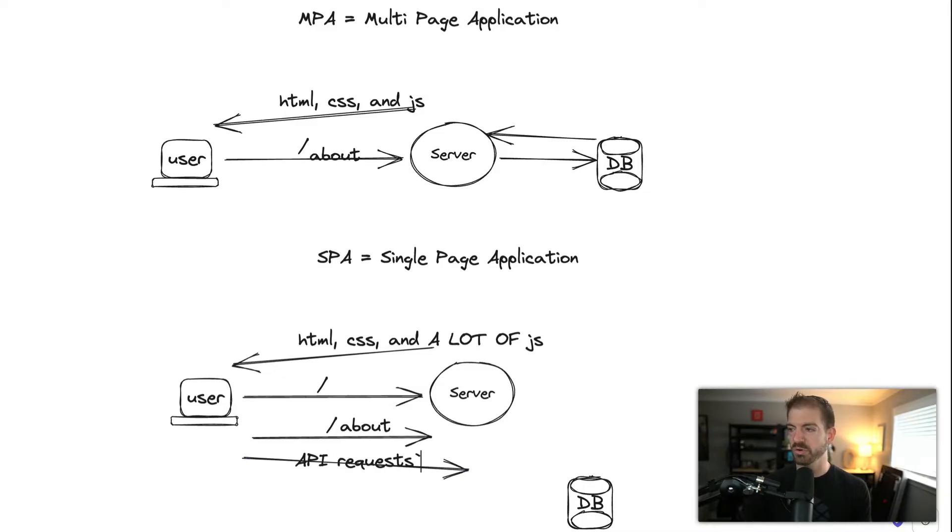So the big difference is: multi-page applications make a full server request and a full page reload on each page you navigate to — home loads everything for home, about loads everything for about. The interactions with the database are handled during that transaction. Versus a single page application, which makes predominantly one page request to the server, getting back a big JavaScript bundle for navigation and interactions, and then any additional data needed on the front end is fetched via API requests to the back end.